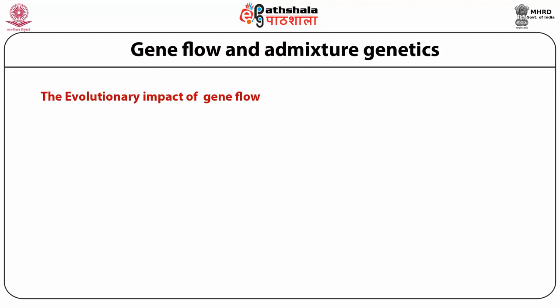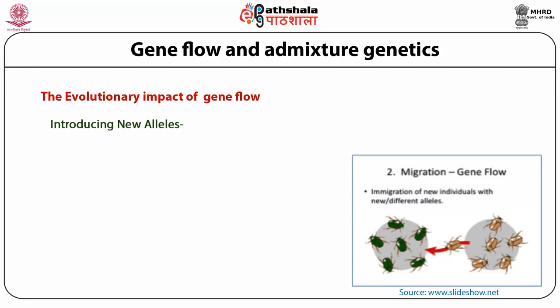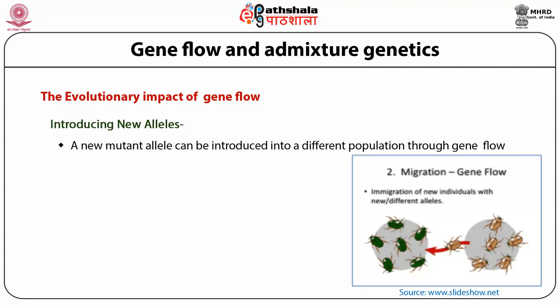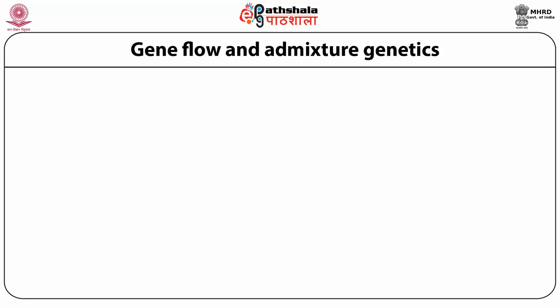Now let's come to the evolutionary impact of gene flow. Gene flow affects evolution in many ways. First of all, the introduction of new alleles into the population: the only way a new allele can enter a population is either through mutation or recombination. The two other evolutionary processes, drift and selection, can increase or decrease the frequency of a new mutation or variation. Although mutation is the ultimate source of all new alleles, a new mutant allele can be introduced into different populations through gene flow. Gene flow allows the spread of new mutants into different populations of a species, subjecting each population to the further effects of drift and selection.